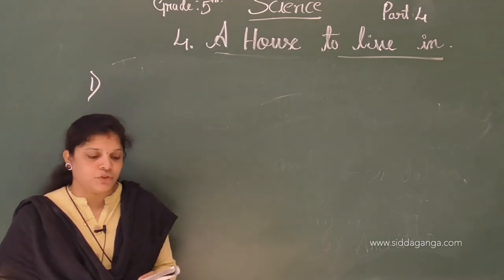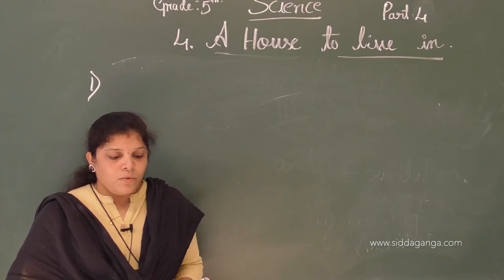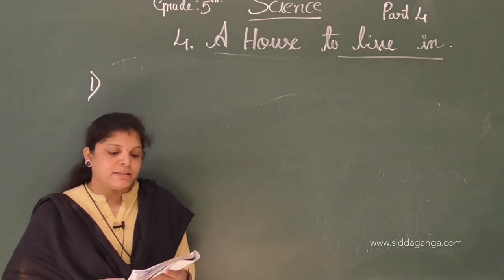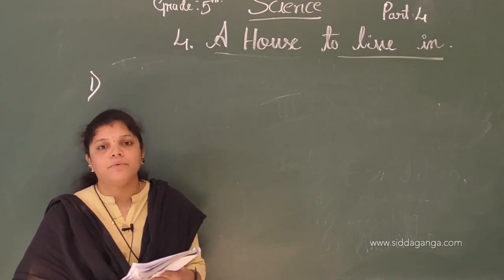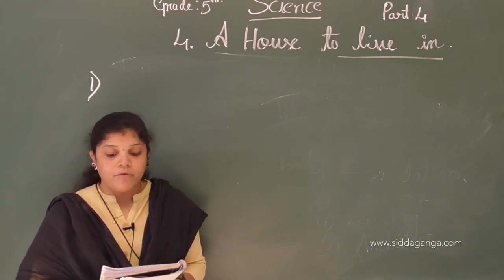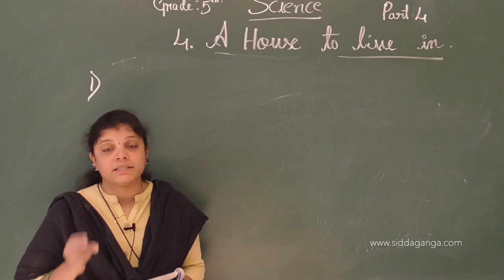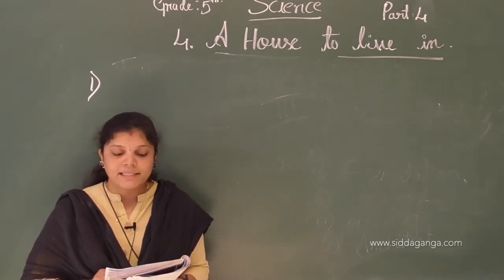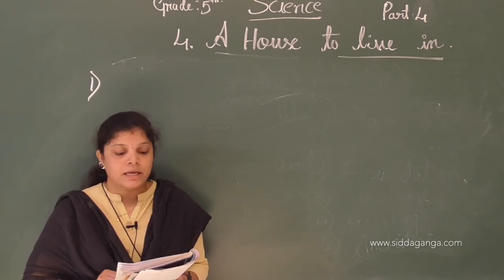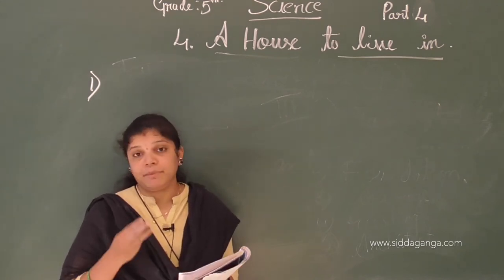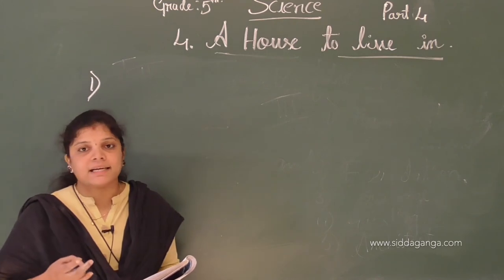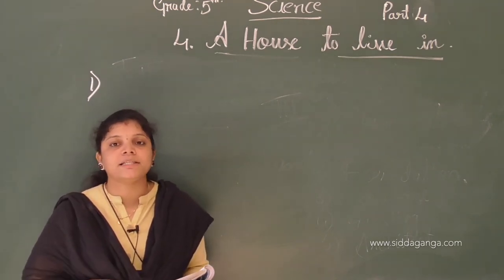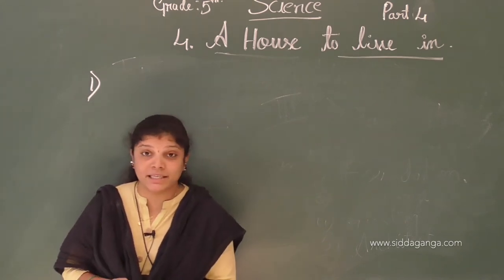Next question: what are the factors that influence the type of a house? The type of a house is influenced by three main factors: first, place and climate; second, economy; and third, materials.